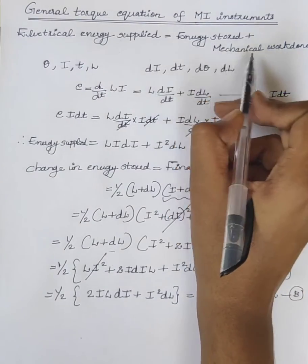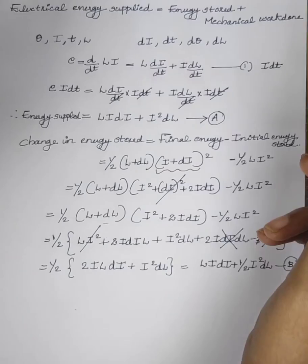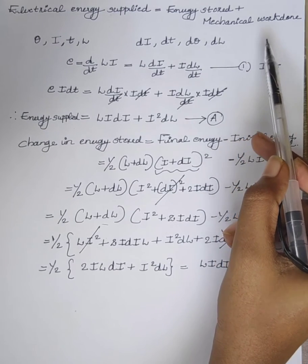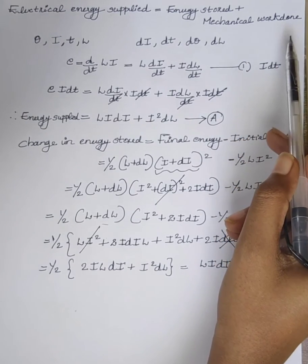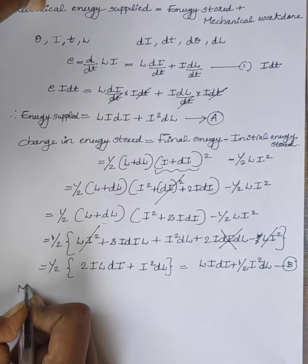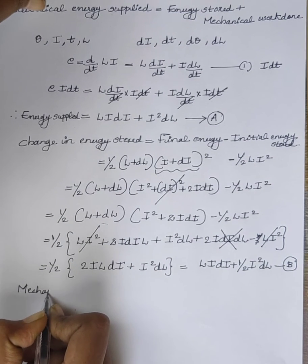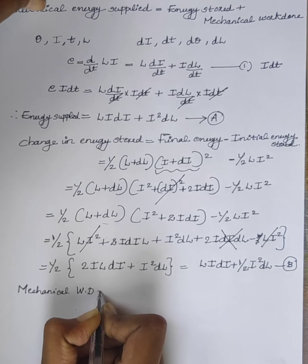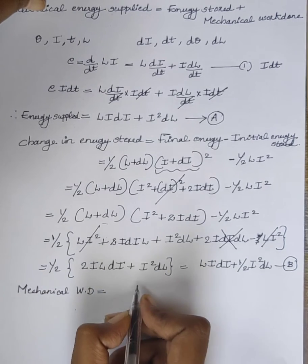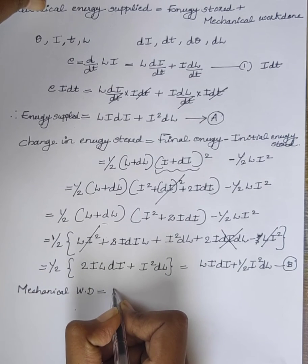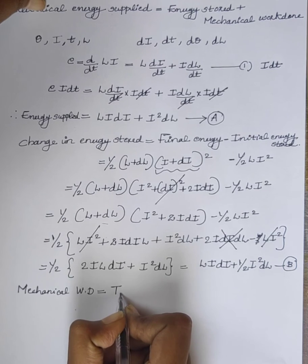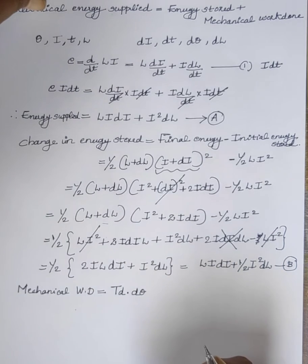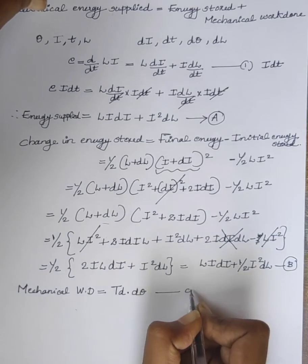So, this is the energy stored. Next, we have to find out the mechanical work done to produce a deflection. Mechanical work done to move the pointer by d·theta is the deflecting torque TD multiplied by d·theta. [Equation C]